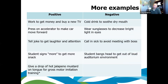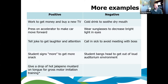Some negative reinforcement examples: you have a cool drink to soothe a dry mouth; you wear sunglasses to get rid of bright light; you call in sick to avoid meeting with your boss; or a student bangs his head to get out of a loud auditorium environment. If you've worked in the field of disabilities, kids will engage in various behaviors to avoid things they don't like. These are differences between positive and negative reinforcement.